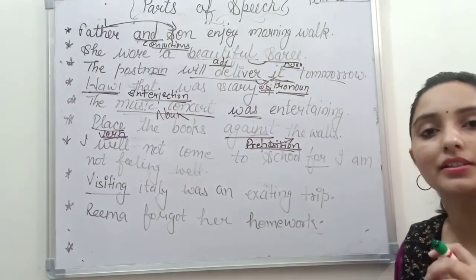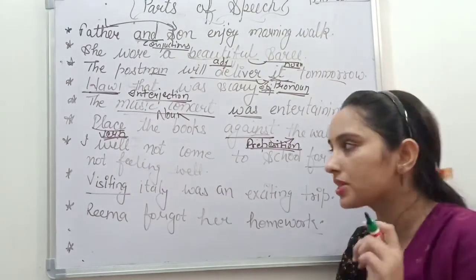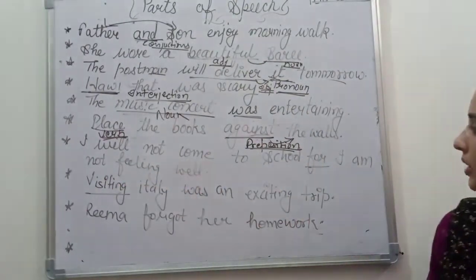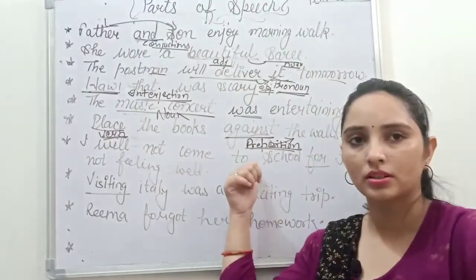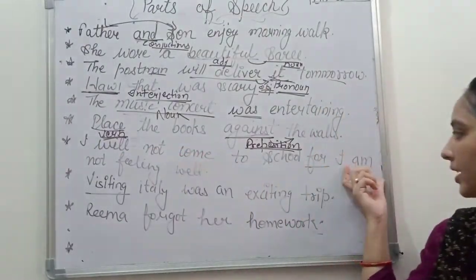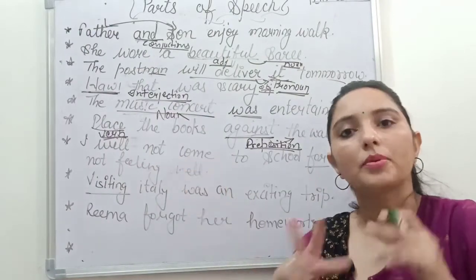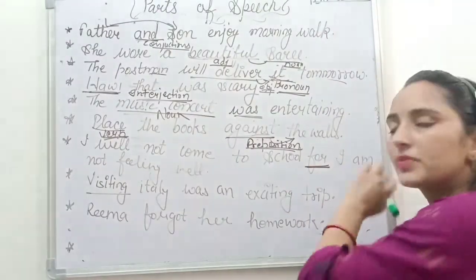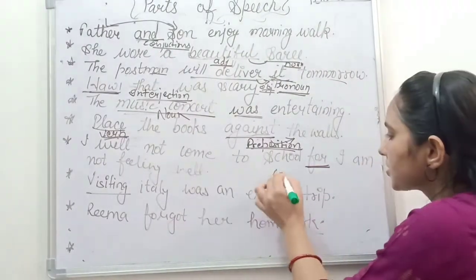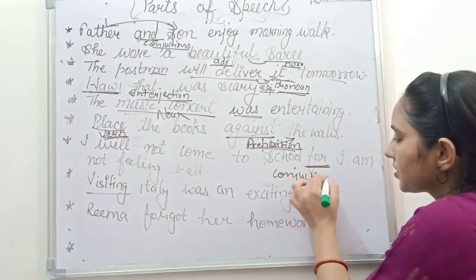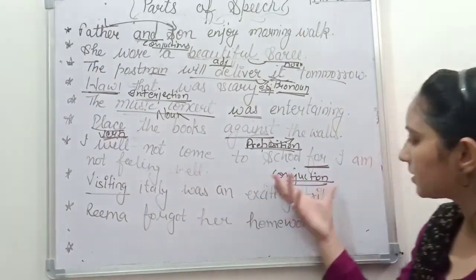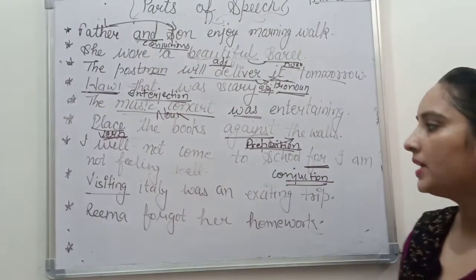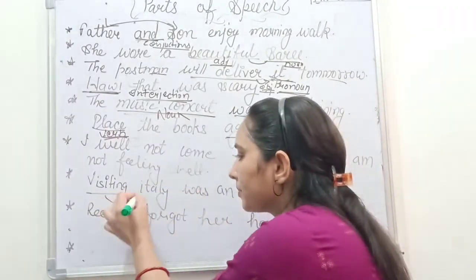Next: 'I will not come to school, for I am not feeling well.' We have two clauses: 'I will not come to school' and 'I am not feeling well.' They are joined by 'for.' Joining is the work of a conjunction. Wherever there is joining, we use a conjunction. Next: 'Visiting Italy was an exciting trip.' Italy is a noun, and the sentence discusses someone visiting Italy.